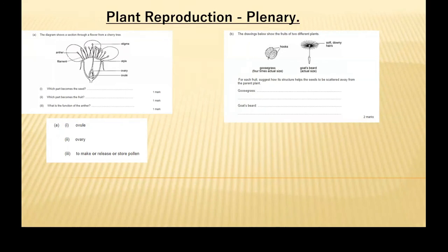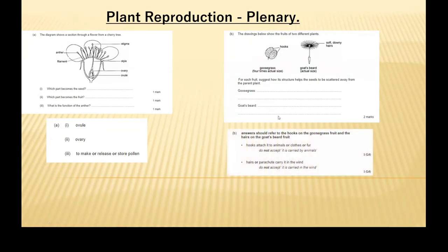Julia: goose grass has hooks that attach to an insect or animal; the second gets scattered by the wind since it can float around. Our answer needed to refer to the hooks on the goose grass and the hairs on the goat's beard fruit.